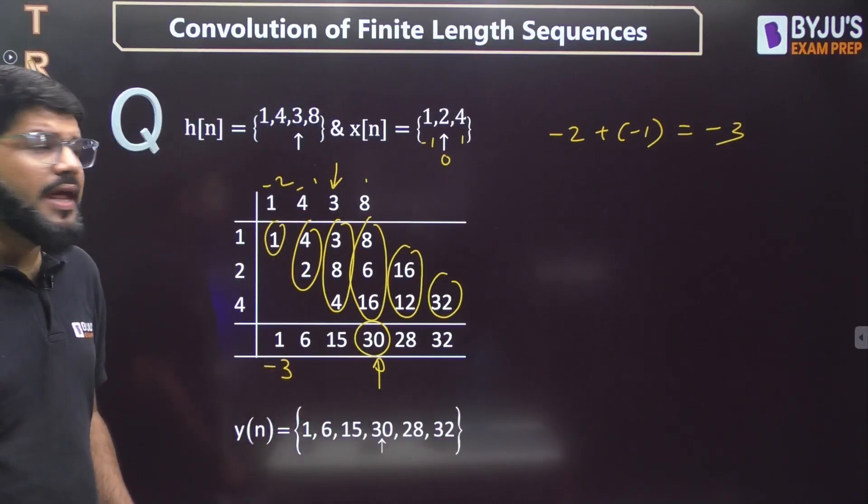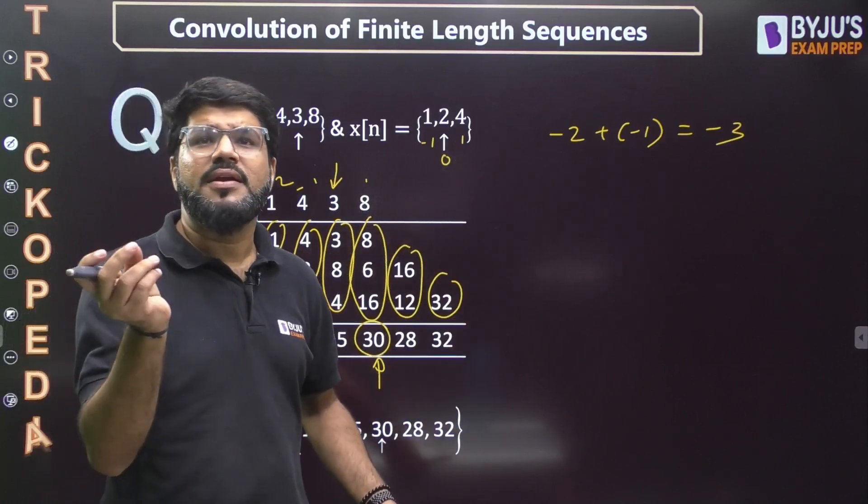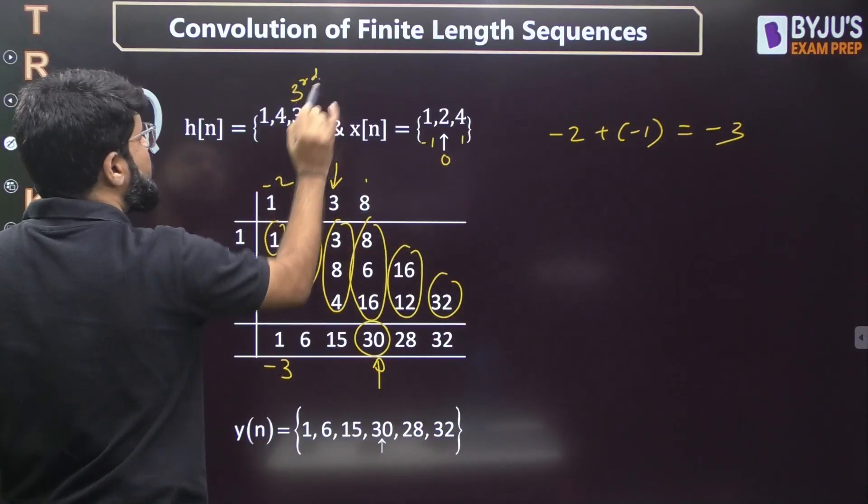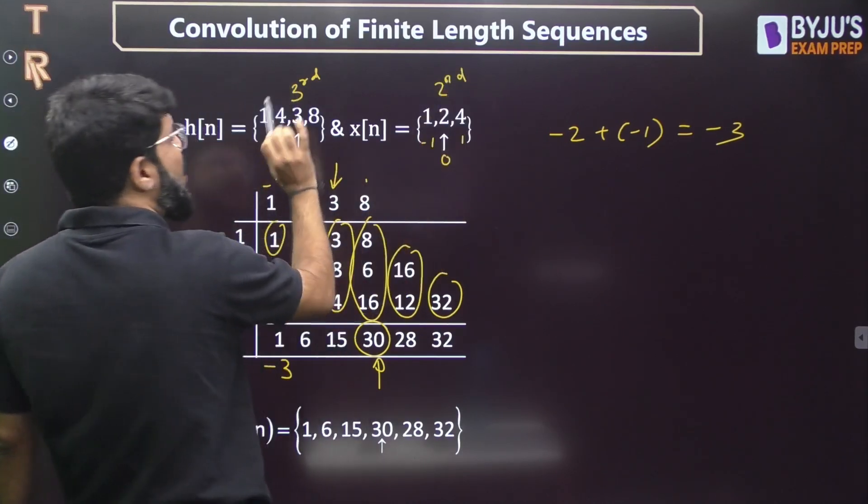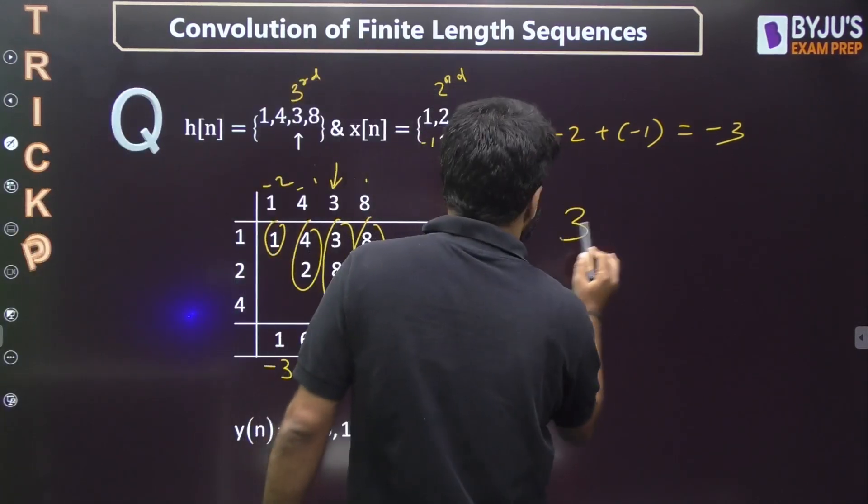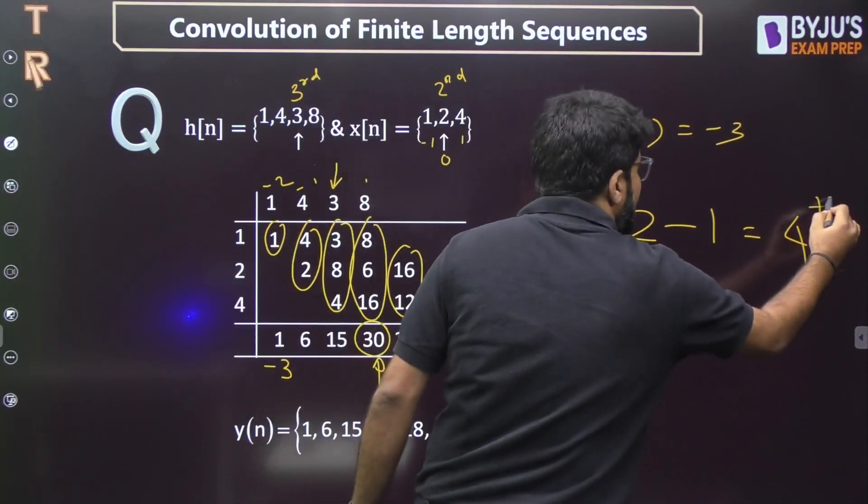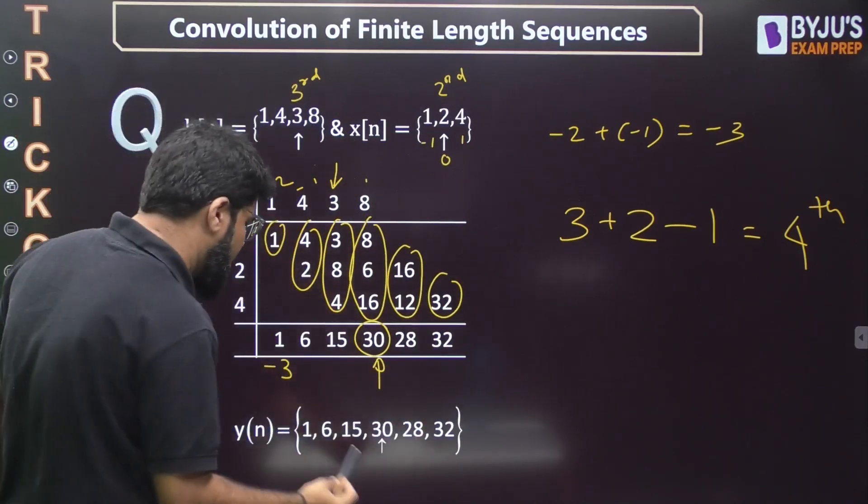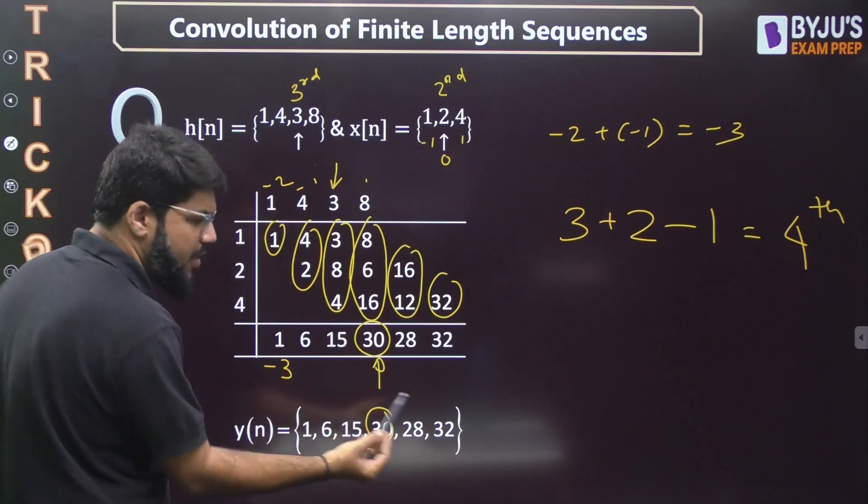How to make it more simple? Rather than counting -2, -1 time index, you can count the location of the arrow. 1, 2, 3, this is the third position starting from beginning. 1, 2, this is second position. Add the position of the arrow, which is 3 plus 2, and do minus 1, you will get 4. Output arrow should be at the fourth position. 1, 2, 3, 4. The output is at the fourth position.